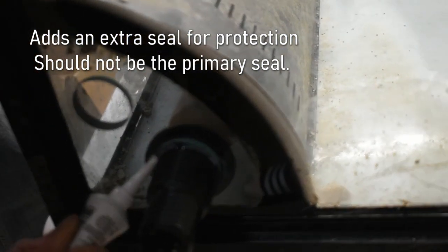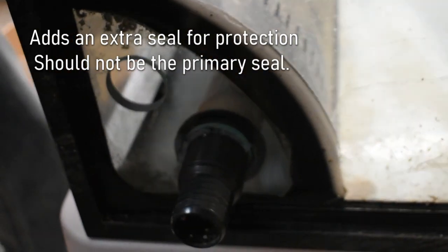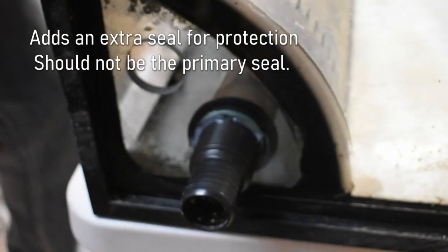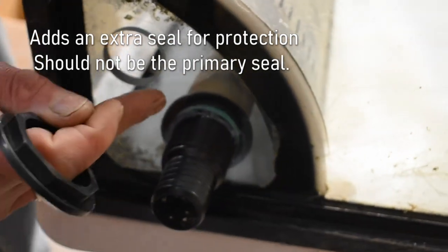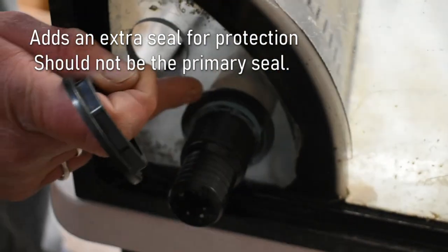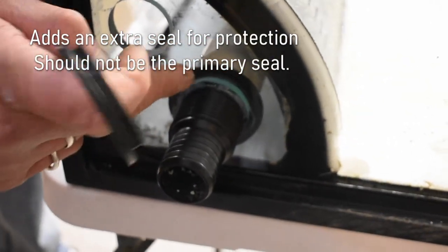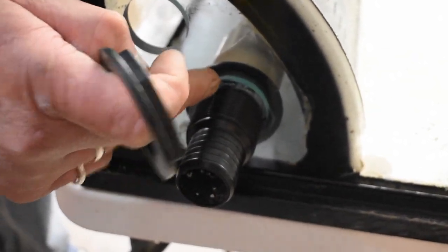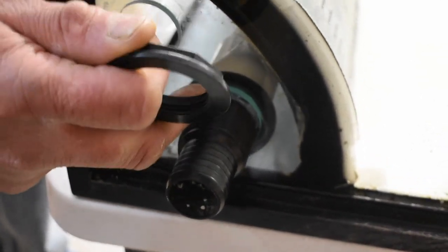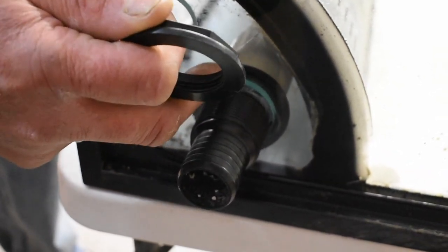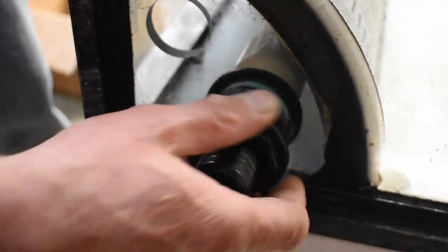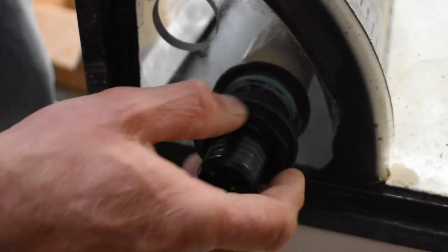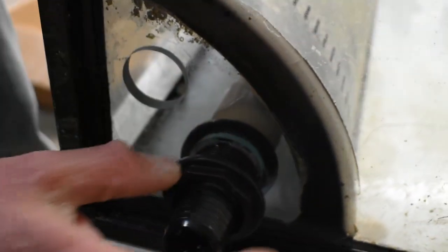Now what that's going to do is it's going to act as a second seal. We don't want that acting as the primary seal - we want the seal on the bulkhead doing all the work. This is like a backup. So this is in here, it's going to help prevent the bulkhead from moving back and forth and it's also going to act as a secondary seal. So the seal should be doing its job despite the silicone being installed in there.